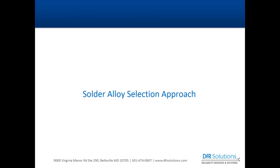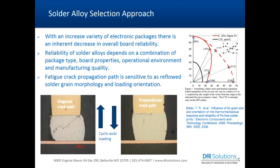Besides physics of failure approach, solder alloy selection is another critical component in system-level reliability. Solder alloy is basically tin-based. Tin is a tetragonal body-centered crystal structure which is allotropic and somewhat anisotropic compared to other alloys. Research by Beeler at SUNY Binghamton characterized the CTE and modulus of solder alloys with respect to crystal structure, illustrating the importance of grain morphology in solder interconnects.